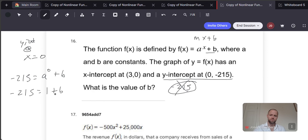And from there, we just subtract 1 from both sides. So it's going to be negative 216 is equal to b. And so negative 216 actually ends up being the correct answer.